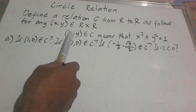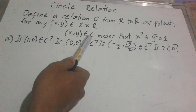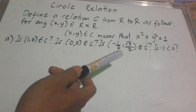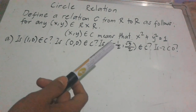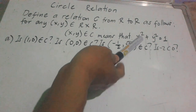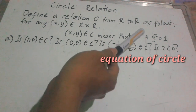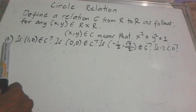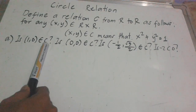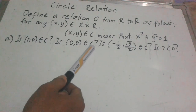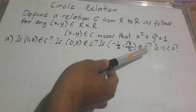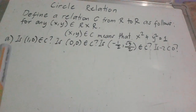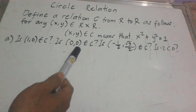So an ordered pair (x, y) is an element of C — meaning it satisfies the circle relation — when x squared plus y squared equals 1. We observe that this formula represents a circle. We will check the following ordered pairs to see which are elements of C.